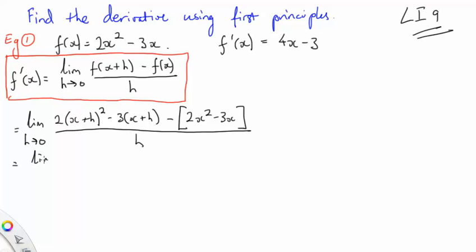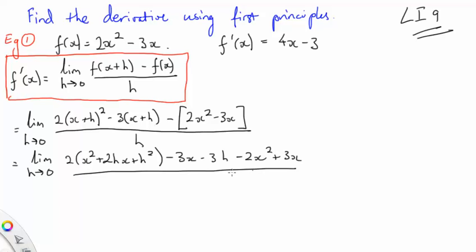Alright. Expand and group like terms. Limit as h approaches 0. Well, because we know binomial theorem now, we know that's going to become x² plus 2hx plus h². Don't even have to think about that anymore. We don't have to think about that either. There we are.